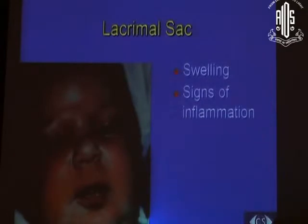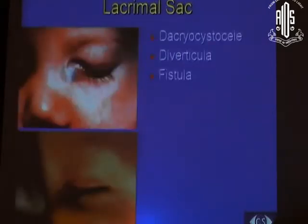If the child has signs of inflammation and swelling in the lacrimal sac area, do not attempt probing — manage conservatively initially — because any sign of inflammation indicates either an acute, sub-acute, or chronic process. You also have to identify dacryocystocele from congenital nasolacrimal obstruction.